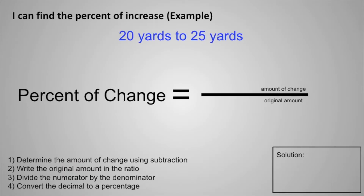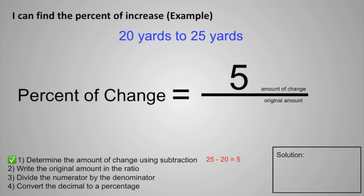Let's take a look at this first example. We'll find the percent of increase. The four steps are at the bottom. Step one: determine the amount of change using subtraction. The problem reads 20 yards to 25 yards. To determine the amount of change, we subtract: 25 minus 20 equals 5. We put 5 as the numerator because it represents the amount of change.